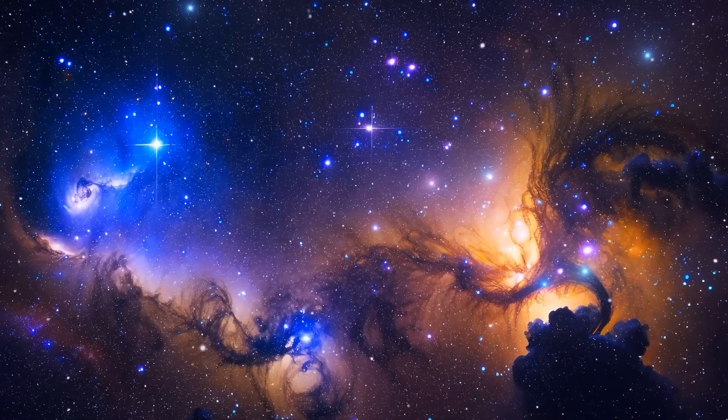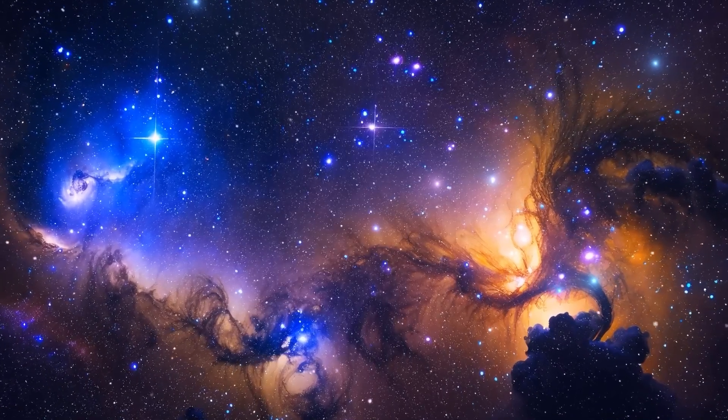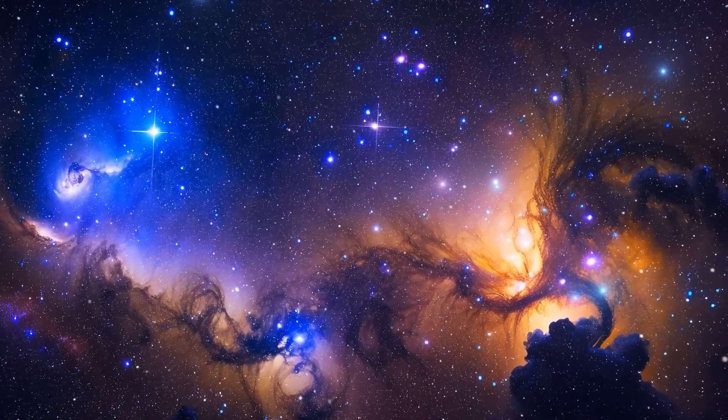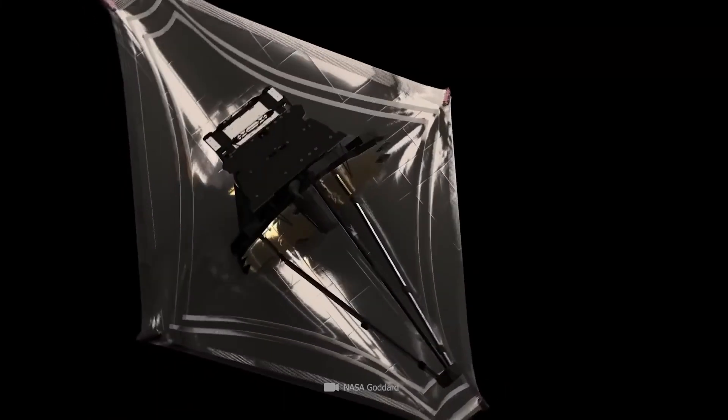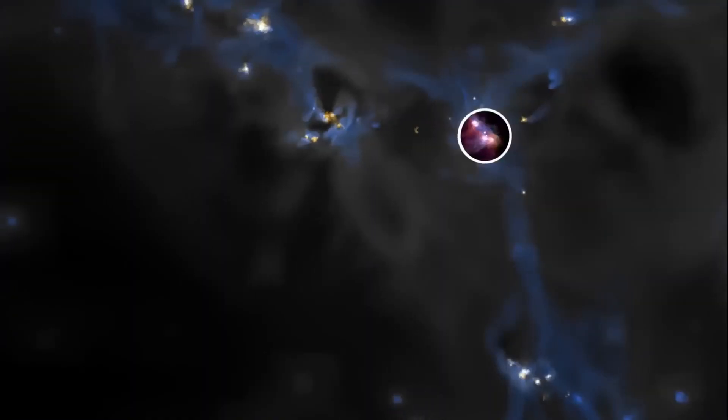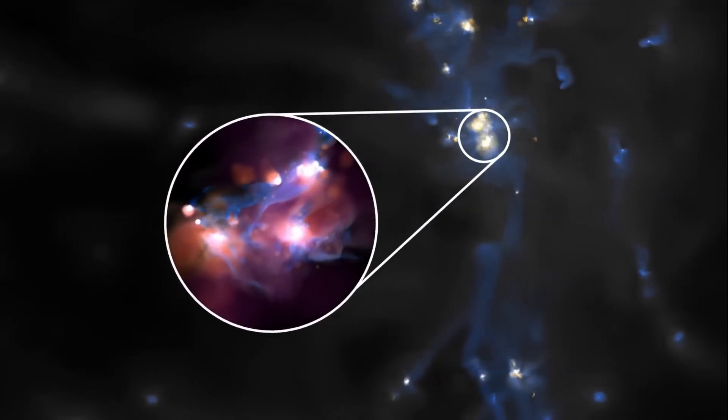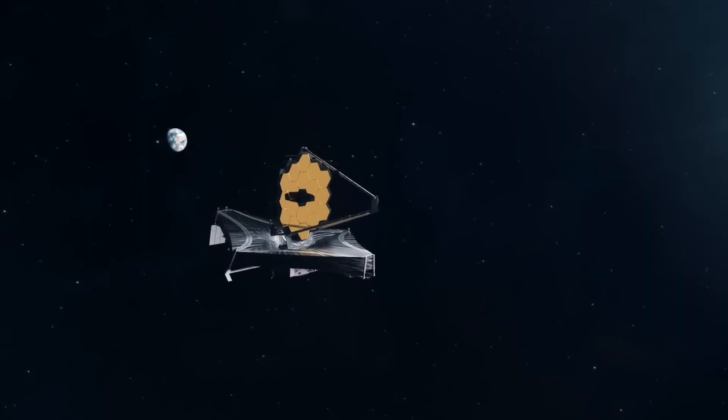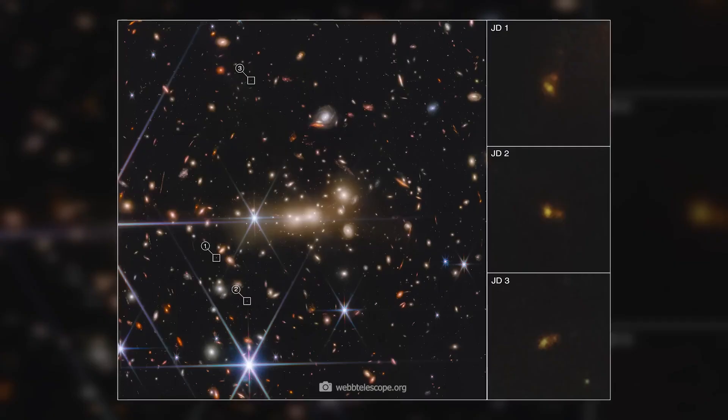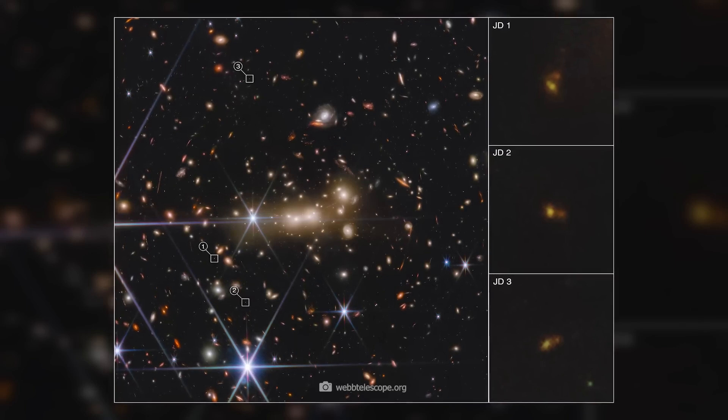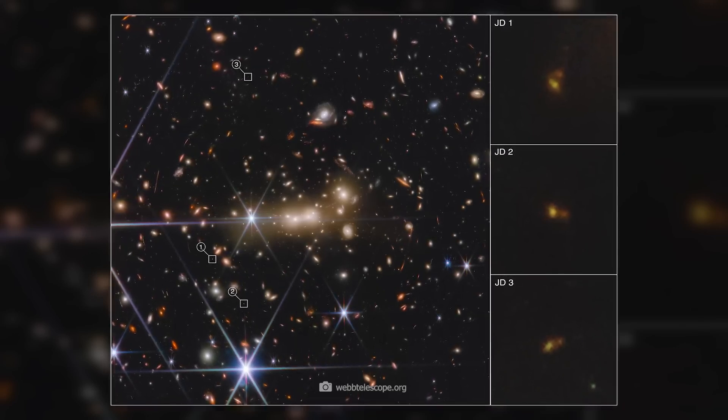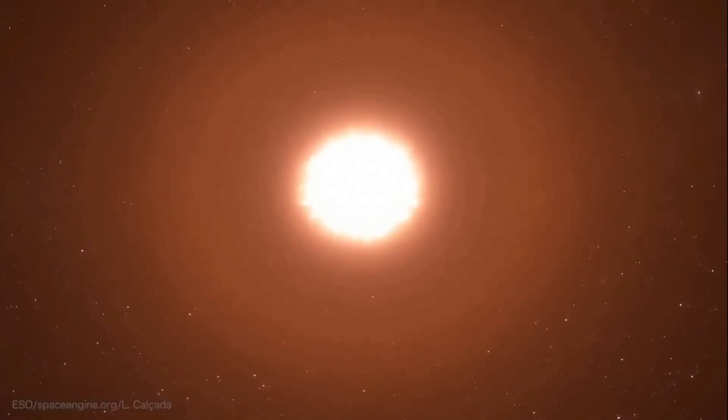Dark matter, which makes up about 27% of the mass of the universe, cannot be observed directly as it does not emit or absorb electromagnetic radiation. Its existence has so far only been proven by its gravitational effects on visible matter. If we now have proof with the dark stars that these stars really exist, we also have indirect proof of the existence of dark matter, and we could study its properties further.